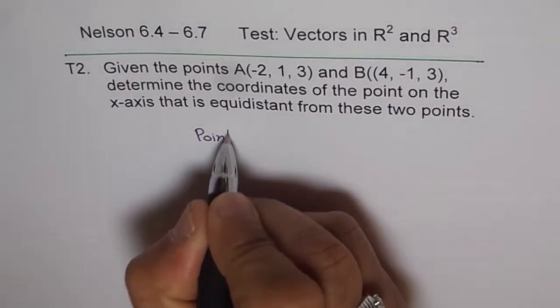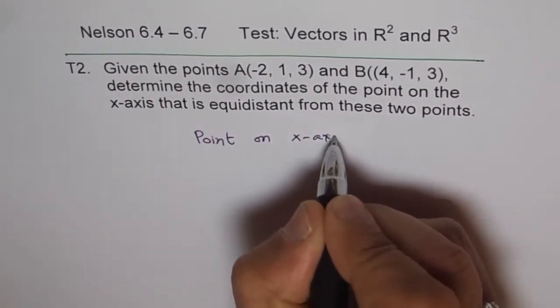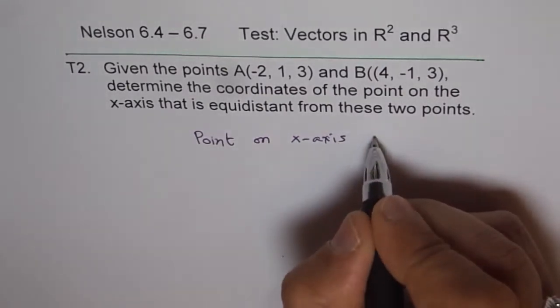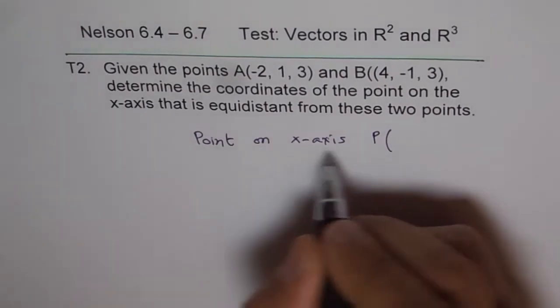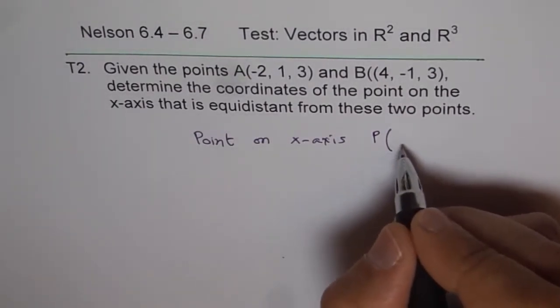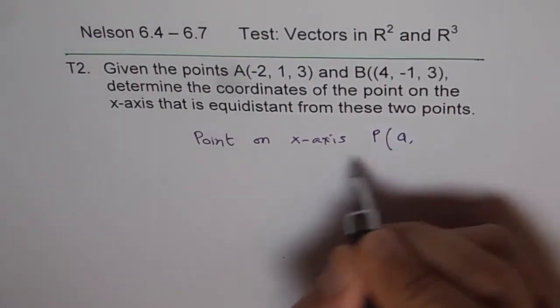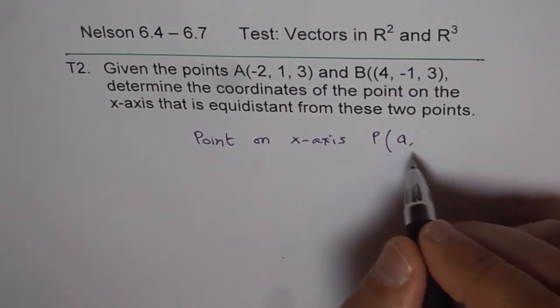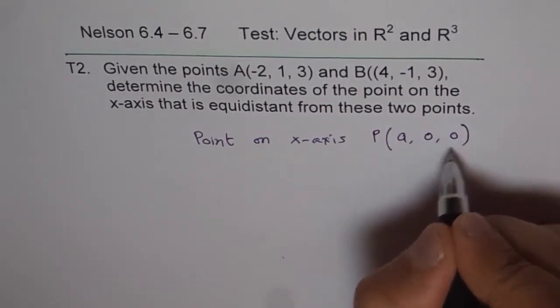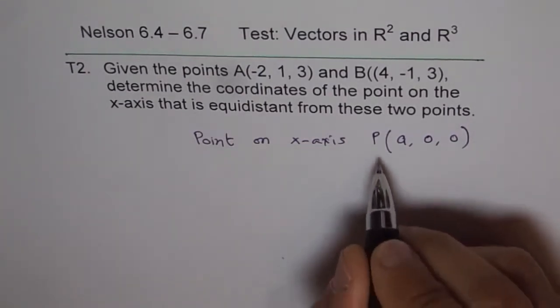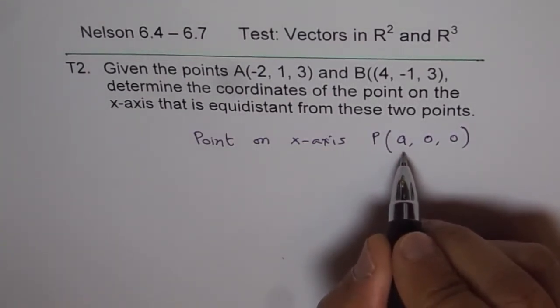So we have a point on x-axis. It means what? Let's say the point is P and on x-axis, the points should be with some value A along the x-axis and it should not move along y and z. So it should be 0, 0. So that is the point P, which will always be along the x-axis.